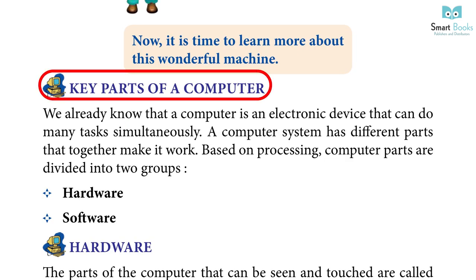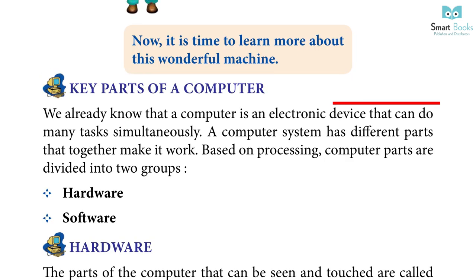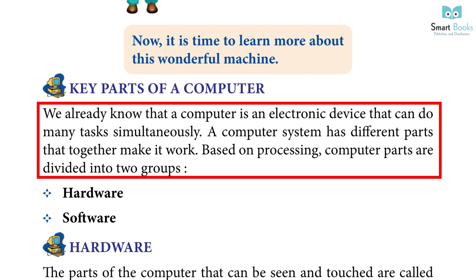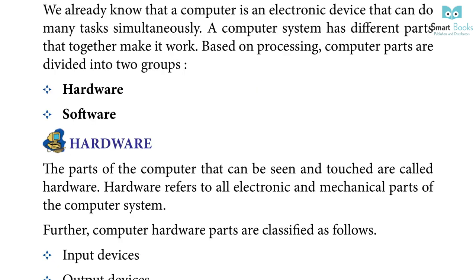Key parts of a computer. We already know that a computer is an electronic device that can do many tasks simultaneously. A computer system has different parts that together make it work. Based on processing, computer parts are divided into two groups: Hardware and Software.